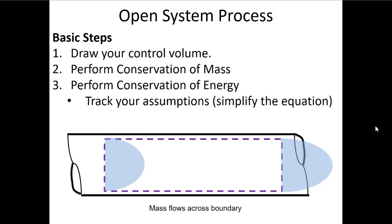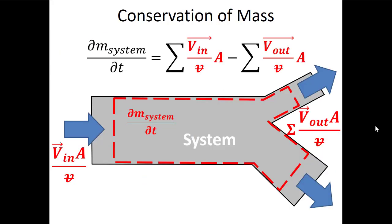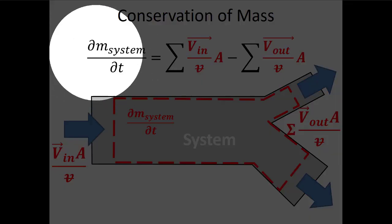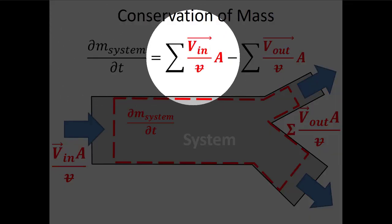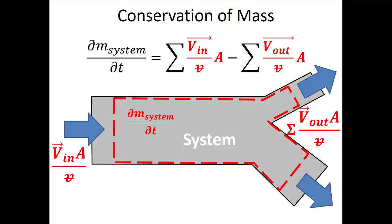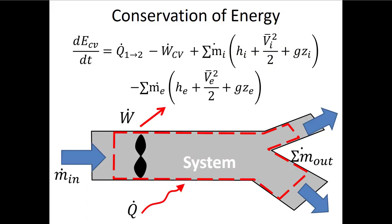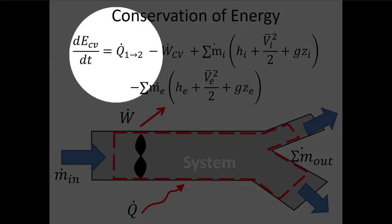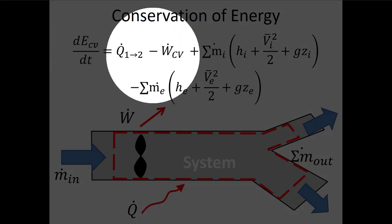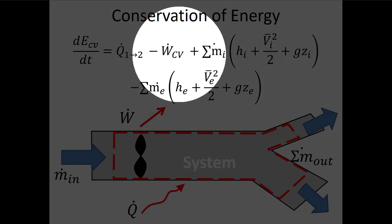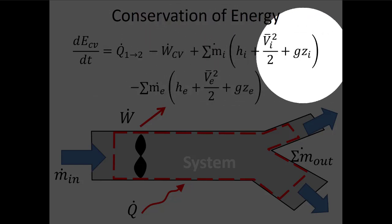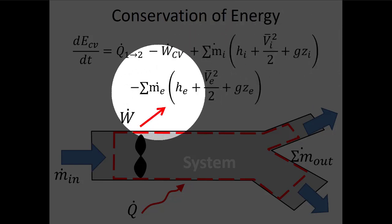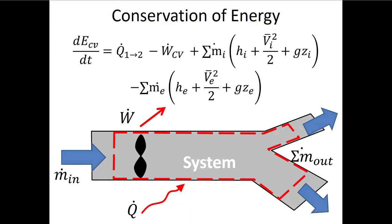Conservation of mass looks like this: the rate that mass is stored in our system equals the sum of all mass flow rates coming in minus the sum of all mass flow rates going out. For conservation of energy, the equation is longer — the rate that energy is stored in the system equals the rate that heat is transferred in minus the rate of work leaving, plus all the different energy terms coming in at all inlets minus all the energy terms going out at all outlets.